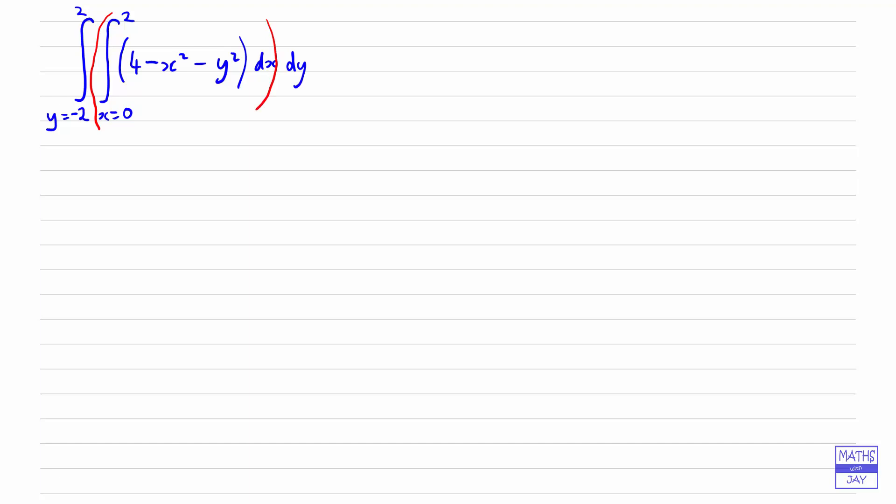Once we've worked out the inner integral we'll simply have a function in terms of y which we can then integrate with respect to y. Notice that we're using y equals minus 2 and 2 to show that those limits are the limits on y, and in the inner integral we've got x equals 0 to 2.